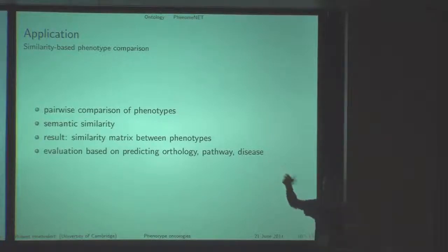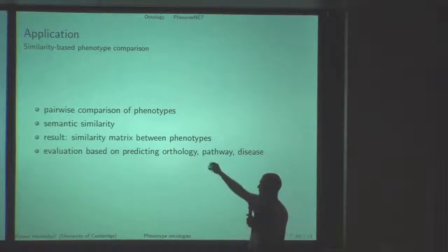Then we applied some form of semantic similarity, which is basically just set overlap. In this case, it's basically set comparison, the Jaccard index weighted by information content.